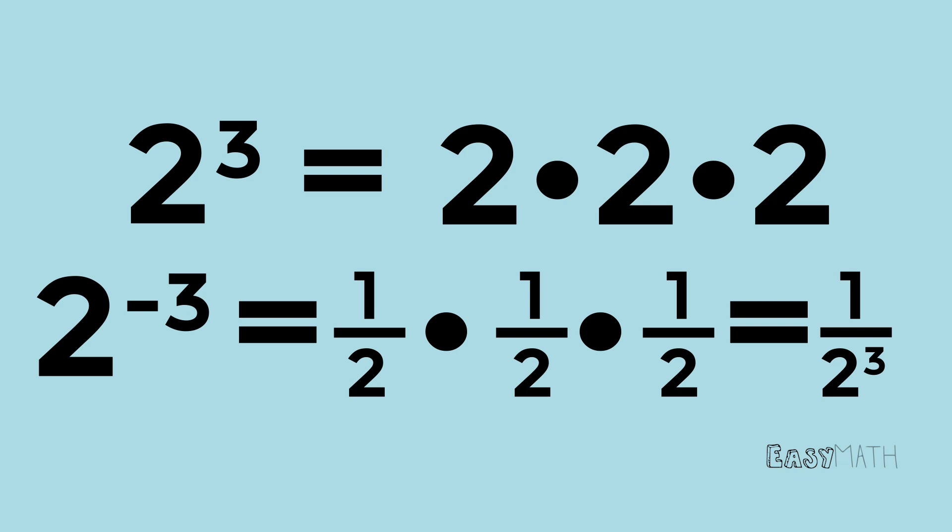We know that exponents can be negative or positive, but what about fractions? The numerator of the fraction will be the power the base is raised to, and the denominator will be the power of the root. For example, 2 to the one-half power is just 2 being square rooted, and 2 to the one-third power is just 2 being cube rooted.